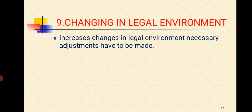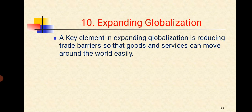And the ninth one is Changing in Legal Environment. It increases, changing in legal environment, necessary adjustments have to be made. And the last one is Expanding Globalization. A key element in expanding globalization is reducing trade barriers so that goods and services can move around the world easily.